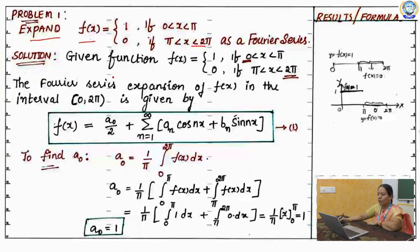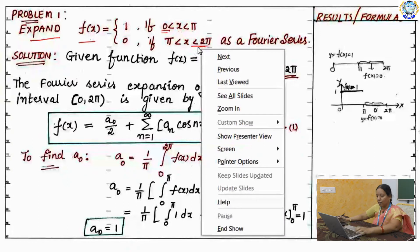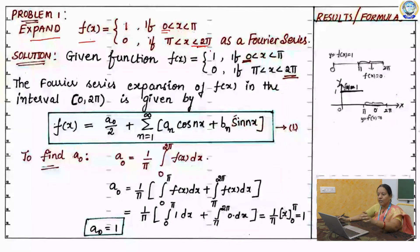First, identify the interval. See where your function starts. It starts from 0 and it ends at 2 pi. So we can conclude that our interval is 0 to 2 pi.